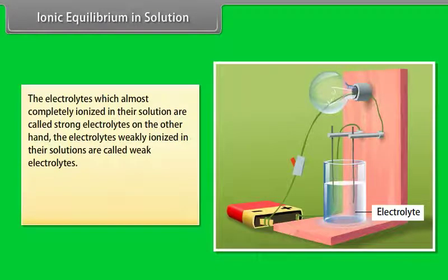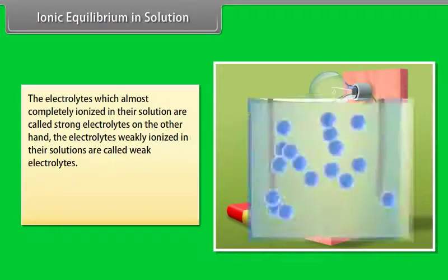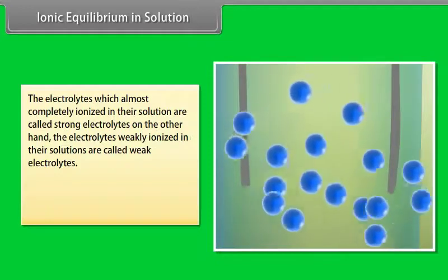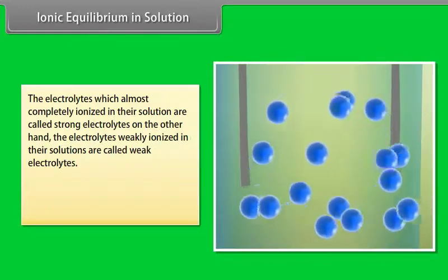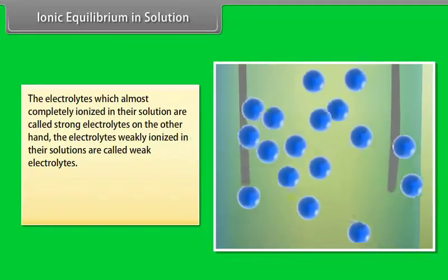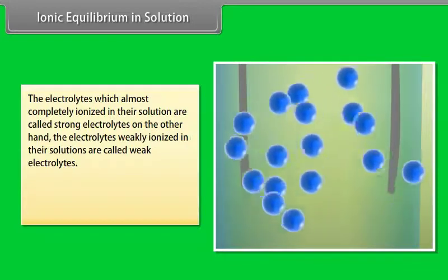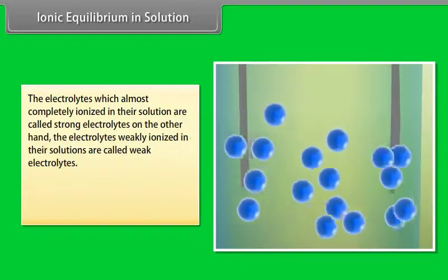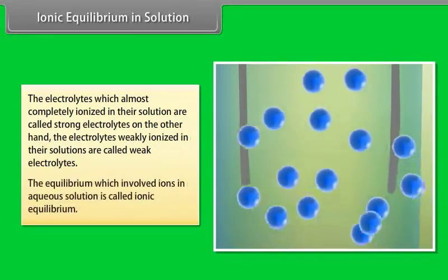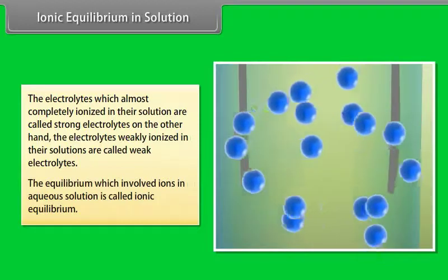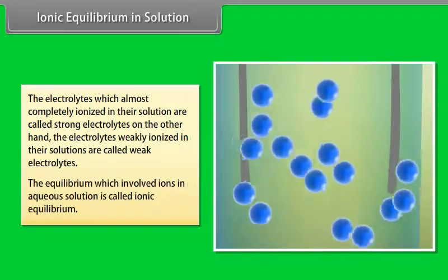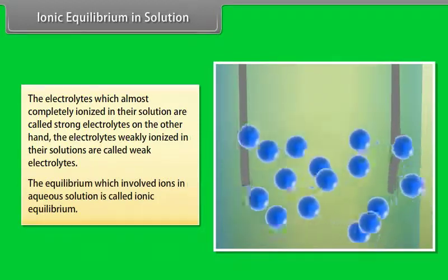Electrolytes which are almost completely ionized in their solution are called strong electrolytes. Those which are weakly ionized in their solutions are called weak electrolytes. The equilibrium which involves ions in aqueous solution is called ionic equilibrium.